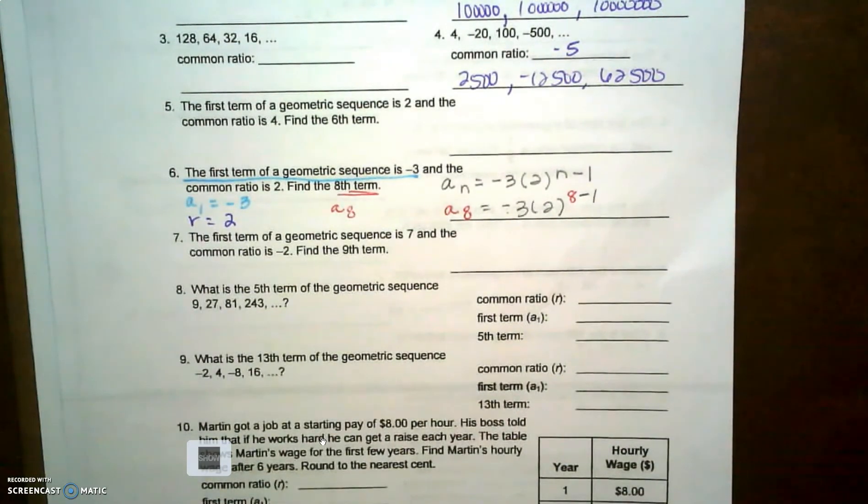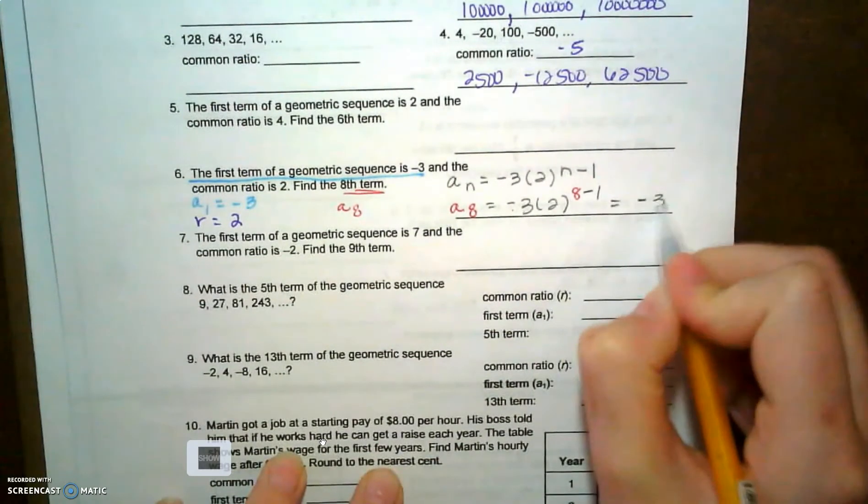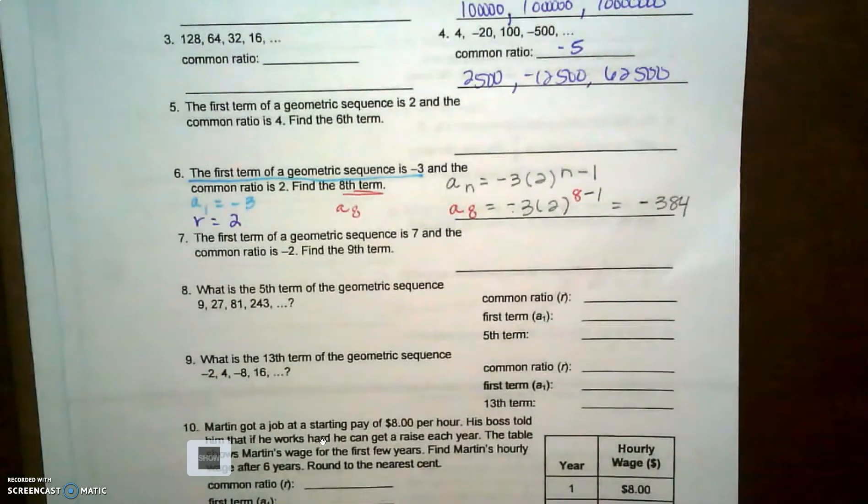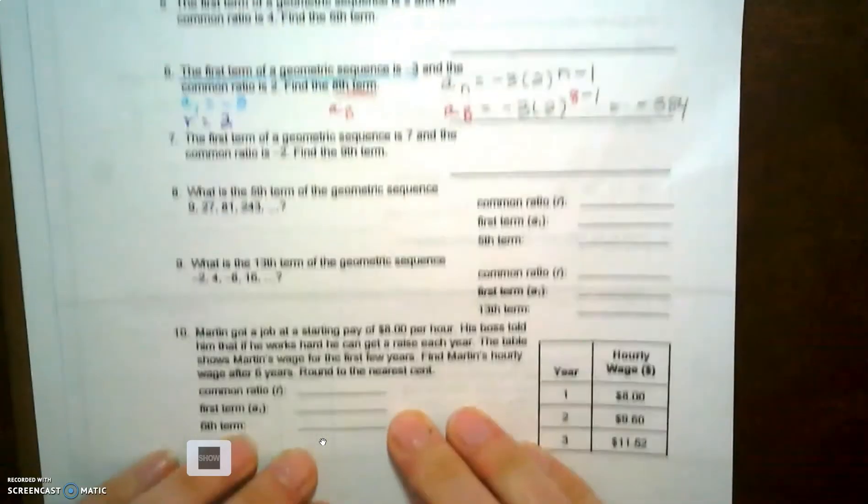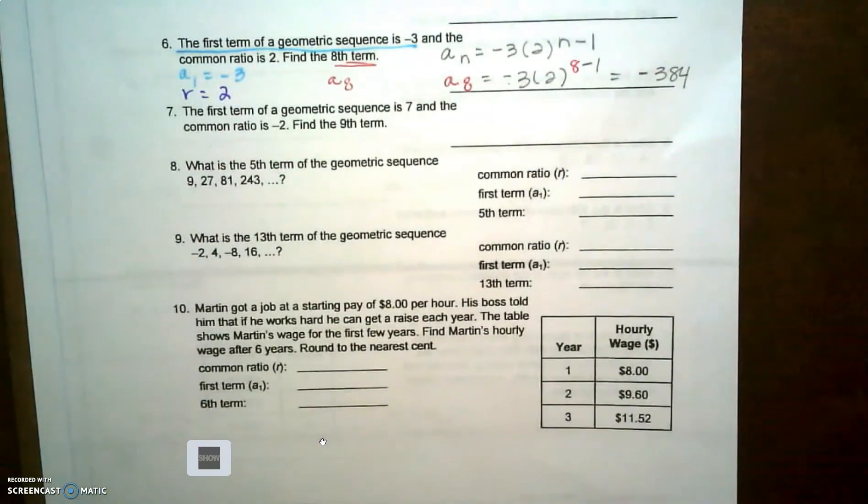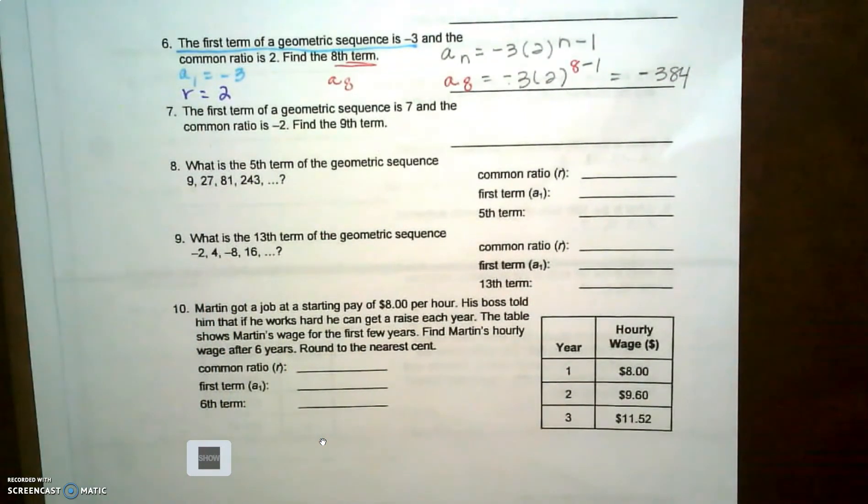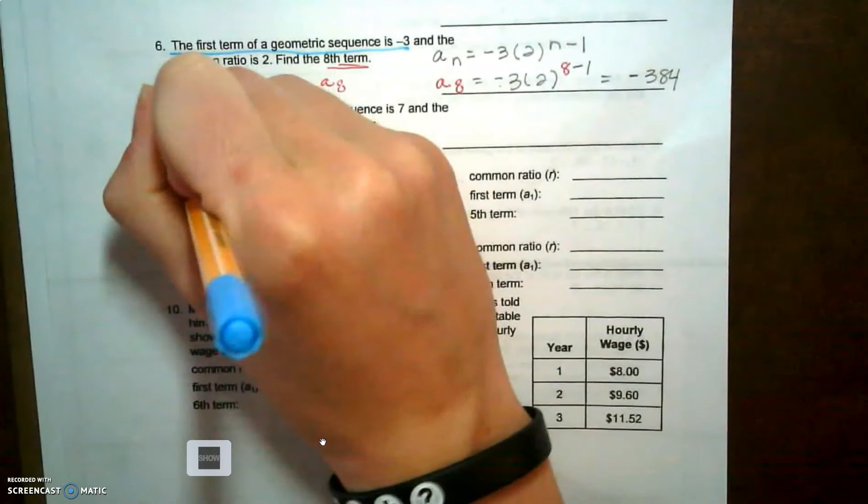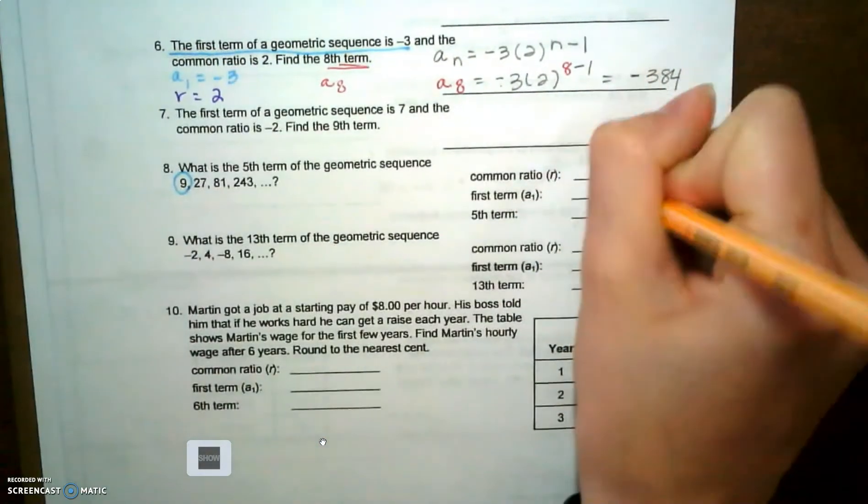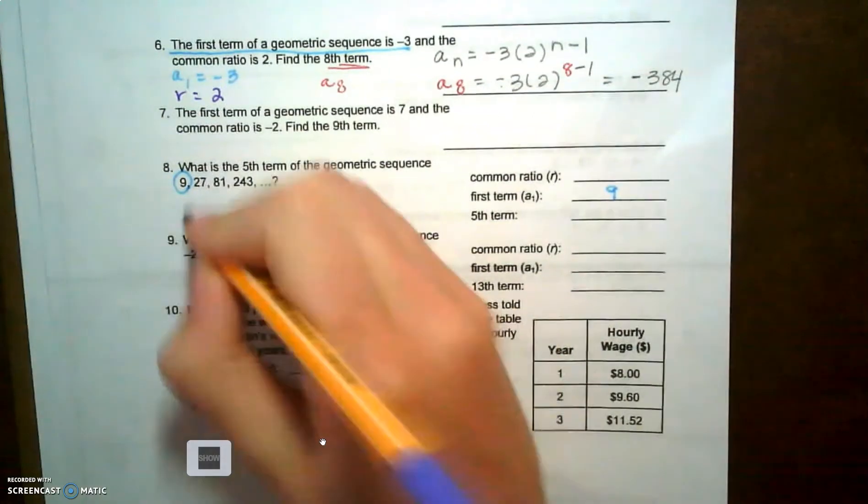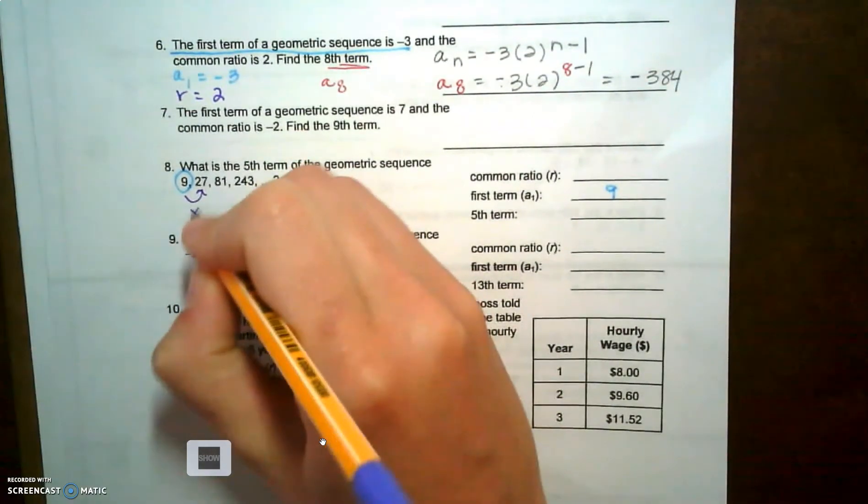Okay, another example here. What is the fifth term of the geometric sequence? So now we've been given a list, so my first term is going to be the first thing I see in my sequence, that's nine. My common ratio, remember that's what I'm multiplying by every time, it's gonna be three.